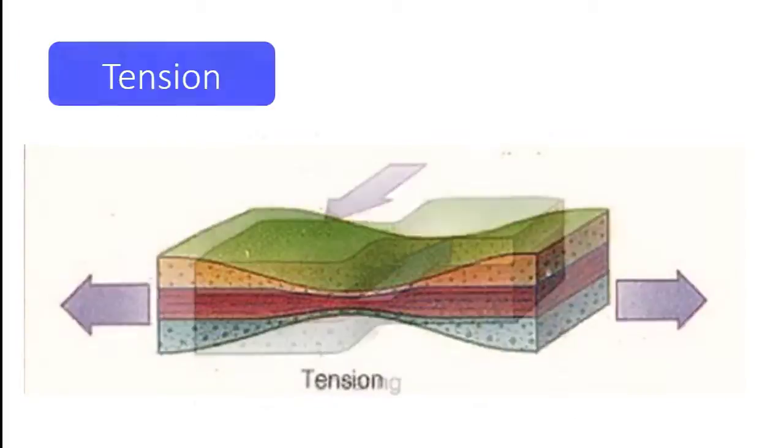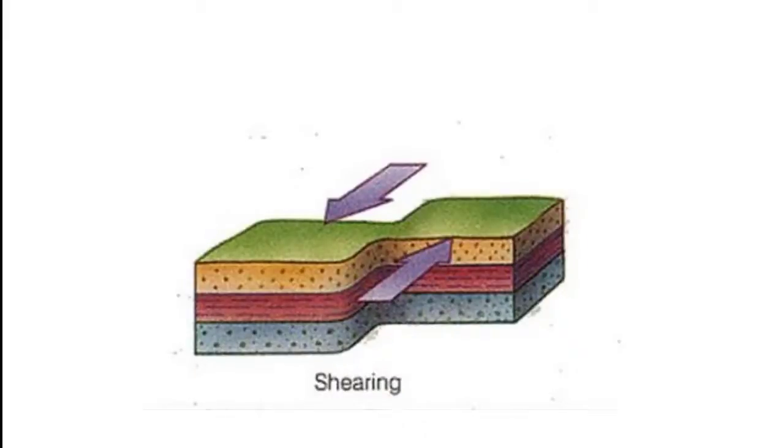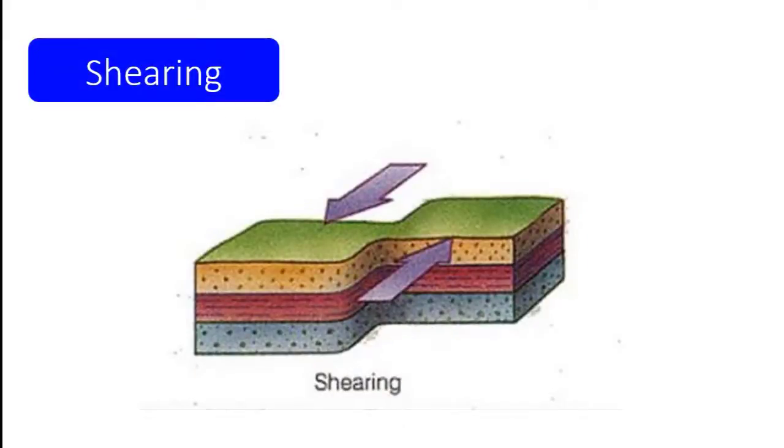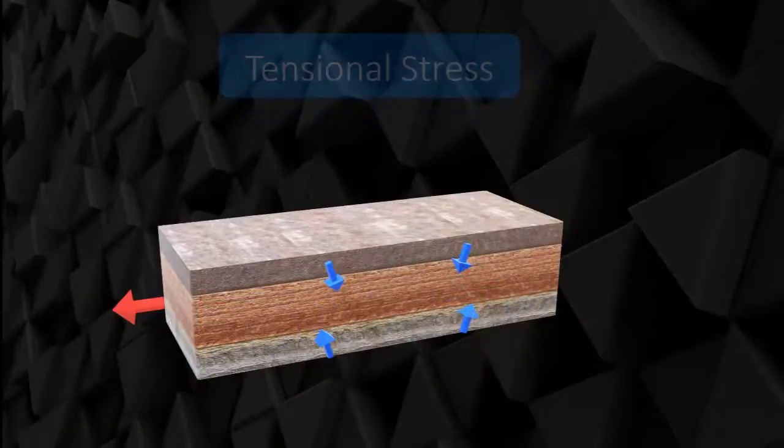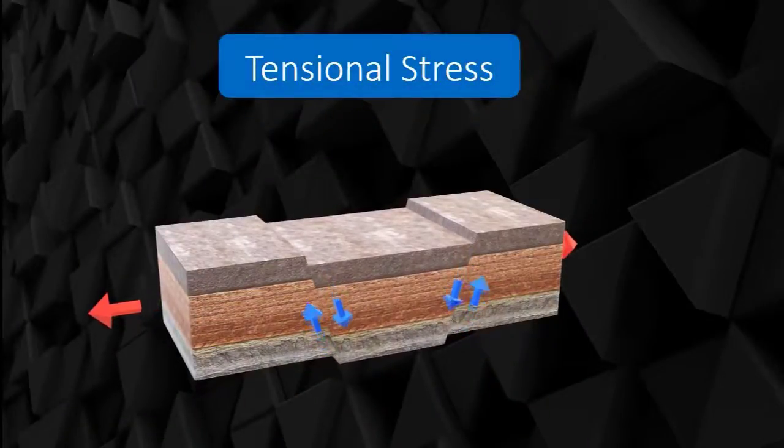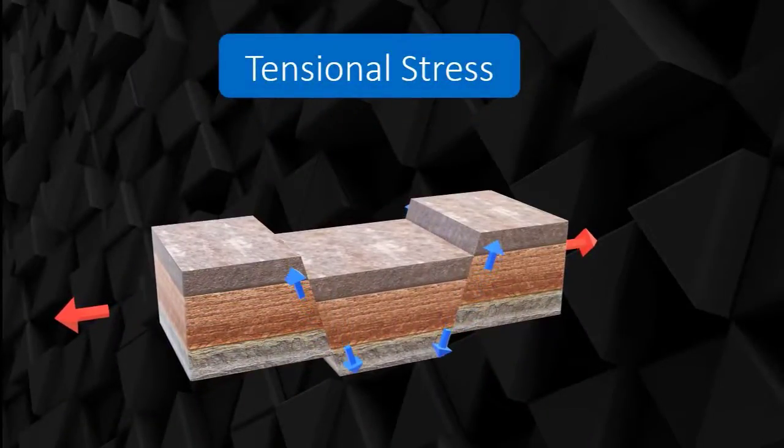There are two types of stress: tension and shearing. Let's learn more about each type of stress. Tension stress, as shown in the illustration, stretches rocks and over time this results in formation of valleys.